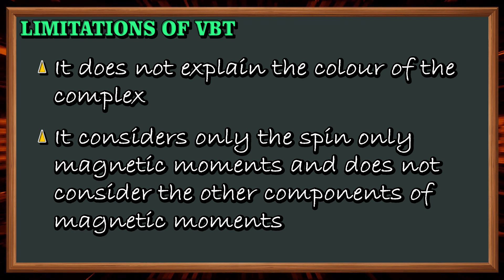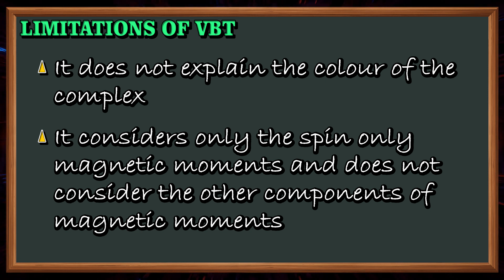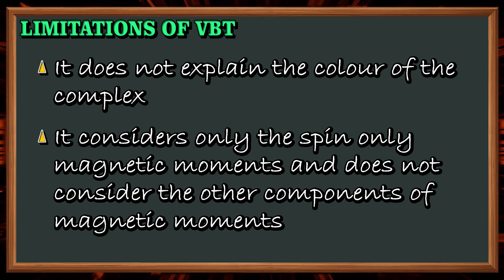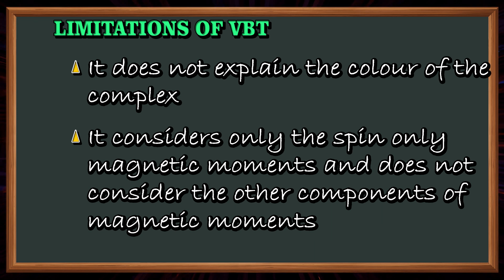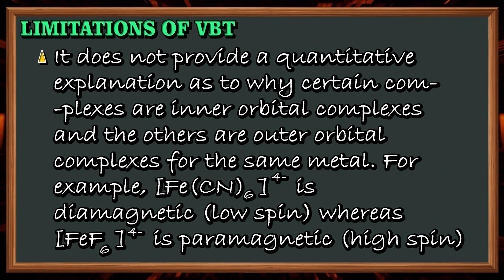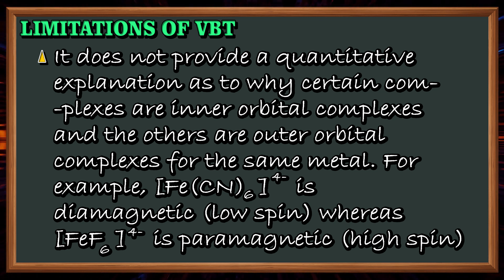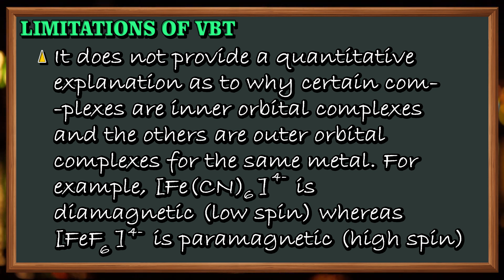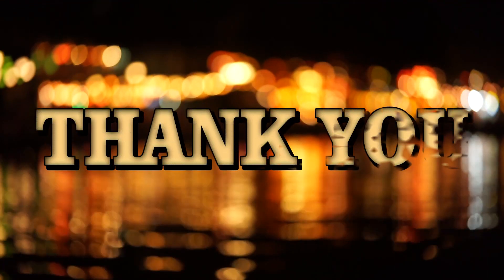Limitations of Valence Bond Theory: even though it explains many observed properties of complexes, it has the following limitations. It does not explain the color of the complex. It considers only the spin-only magnetic moment and does not consider other components of magnetic moment. It does not provide a quantitative explanation as to why certain complexes are inner orbital and others are outer orbital for the same metal — for example, iron hexacyanide is diamagnetic (low spin) whereas iron hexafluoride is paramagnetic (high spin).